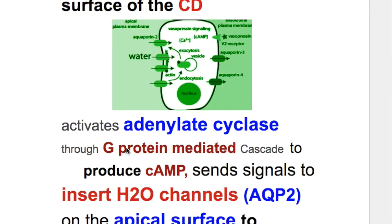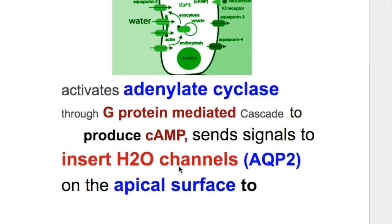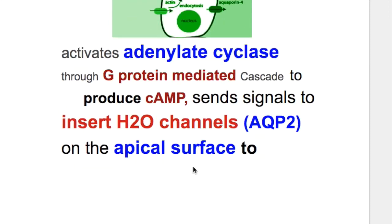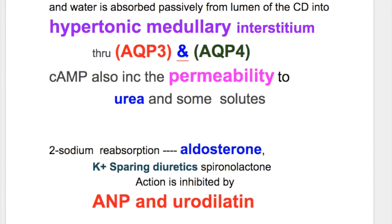ADH acts on vasopressin V2 receptors on the basolateral surface of the collecting duct. It activates adenylate cyclase through a G-protein mediated cascade to produce cyclic AMP, which sends signals to insert water channels (aquaporin 2) on the apical surface to promote water permeability. Water is then absorbed passively from the lumen into the hypertonic medullary interstitium through aquaporin 3 and aquaporin 4.